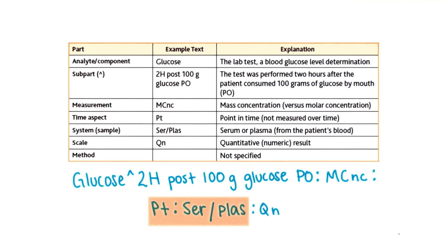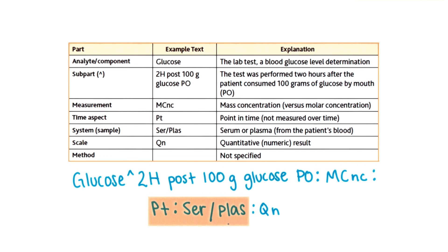The third and fourth parts are the time aspect and the system sample. PT means a point in time rather than a time range. The system sample, S-E-R-P-L-A-S, indicates that the test was performed on the serum or plasma components of a blood sample, and can be modified by a separate subpart, again separated by a carat.